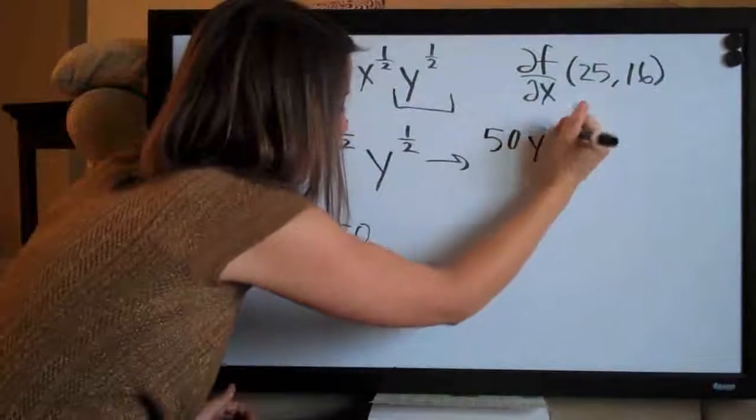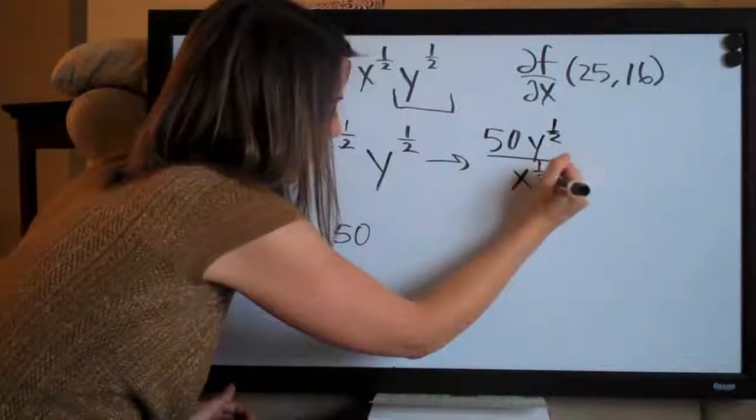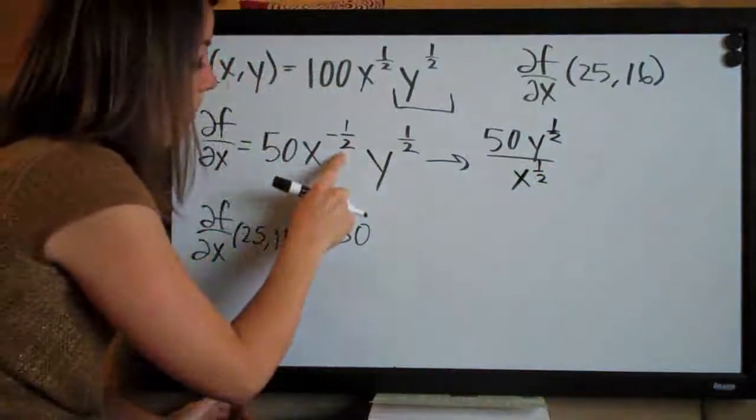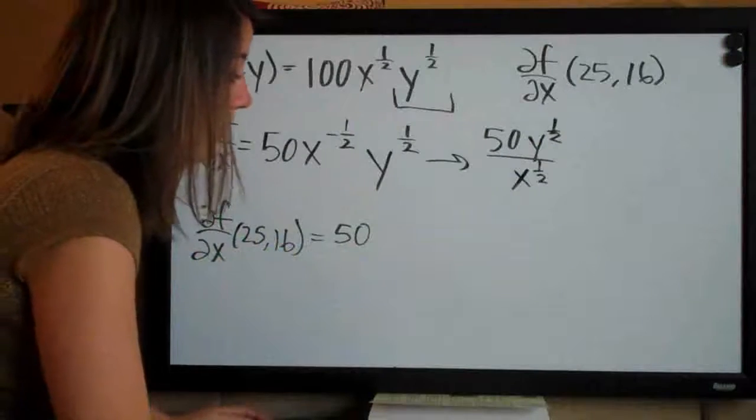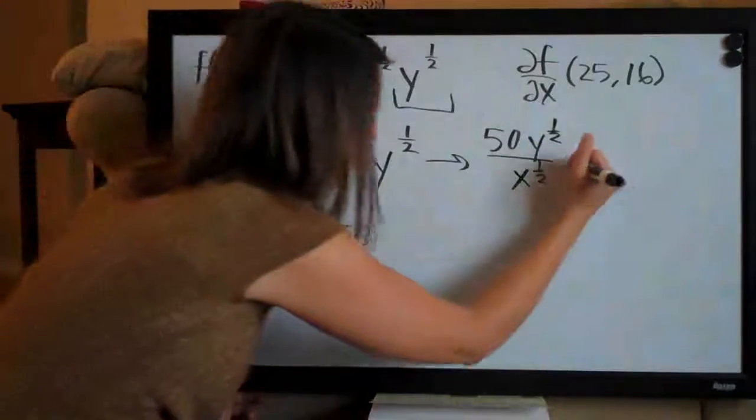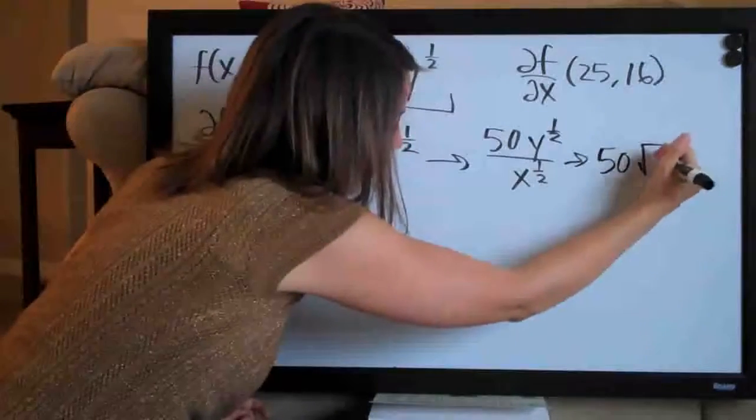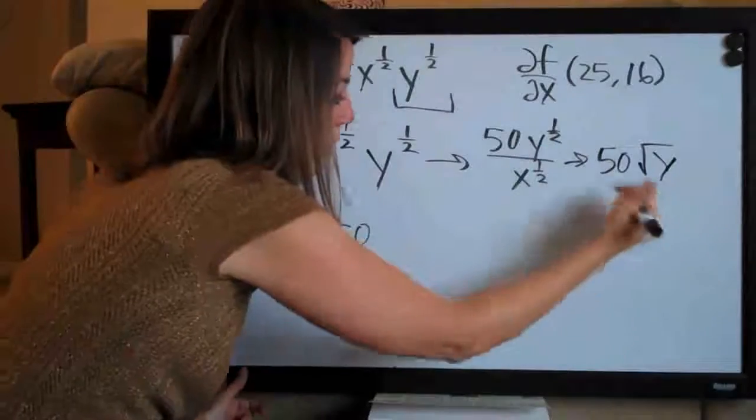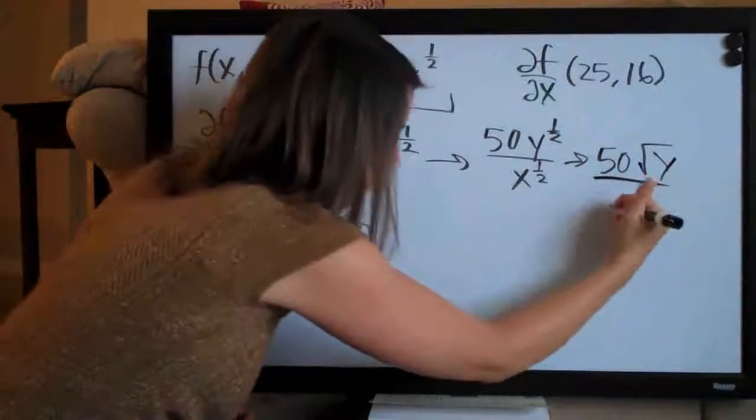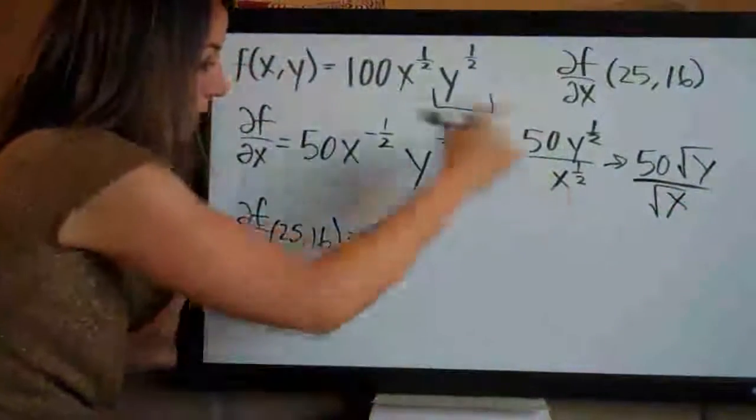So we can simplify this, we'll end up with fifty y to the one-half over x to the one-half. And we just change this exponent from a negative to a positive by changing it from the numerator to the denominator. And now let's just go ahead and call this fifty, anything raised to the one-half is the same as the square root. So fifty times the square root of y over the square root of x. That'll make it easier to plug in this point.